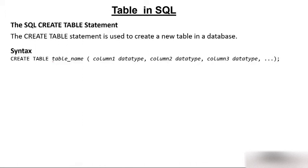The syntax is: CREATE TABLE, then the table name. The table name could be anything — it could be student, employee, university, or anything. Then comes the column name and then its data type. For example, a column could be 'role number' and its data type could be integer or number.